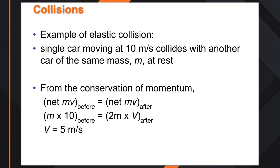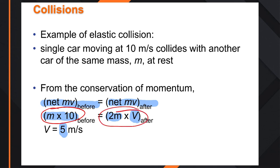An example of elastic collision: a car moving at 10 meters per second collides with another car of the same mass at rest. Using conservation of momentum — whatever momentum we have beforehand must equal momentum afterwards. If the car was traveling at 10 and hits something with equal mass, we now have twice the mass, so the velocity is cut in half. We had 10 to start; cut in half gives us 5. Conservation of momentum.